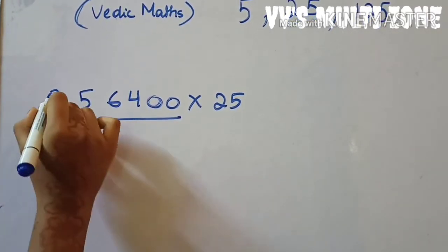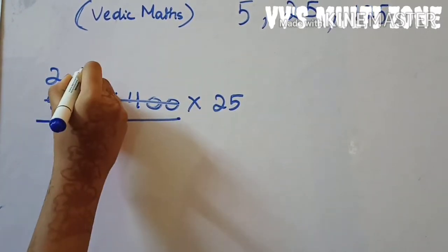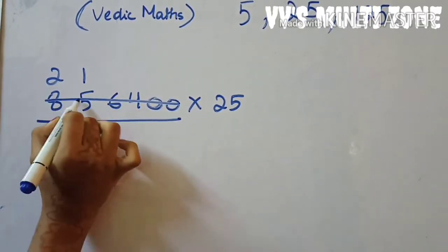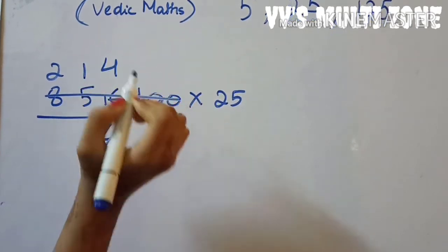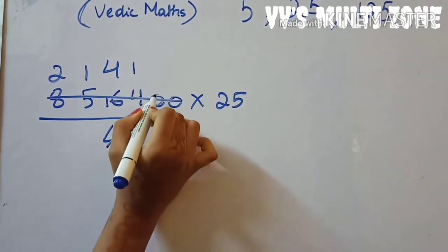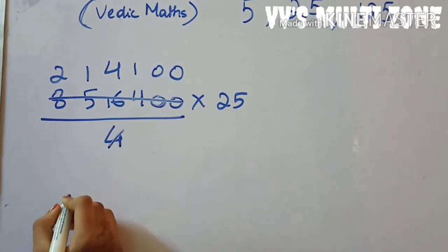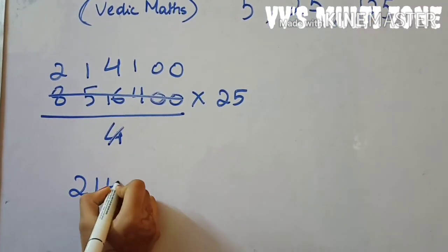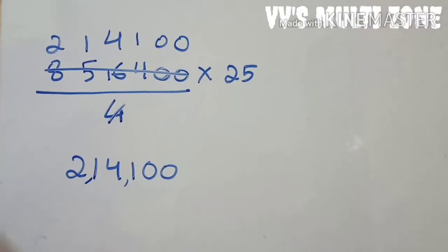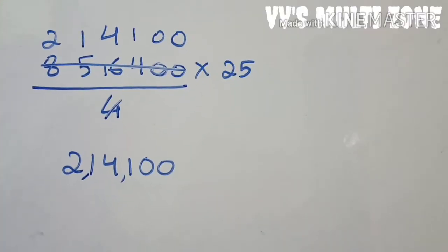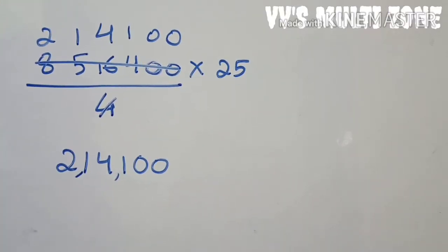You can see: four ones are four, four twos are eight, four ones are four, and one will get carried. Four fours are sixteen, four ones are four, four zeros are zero, and another zero. Your answer is 2,14,100 — that is two lakh fourteen thousand one hundred.